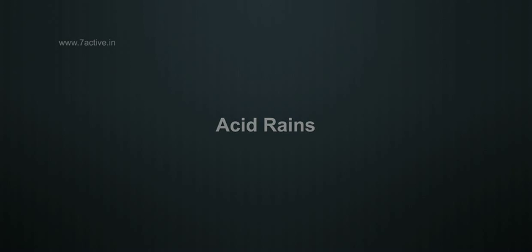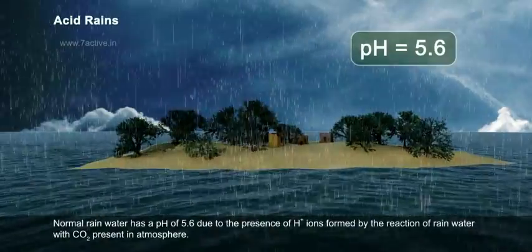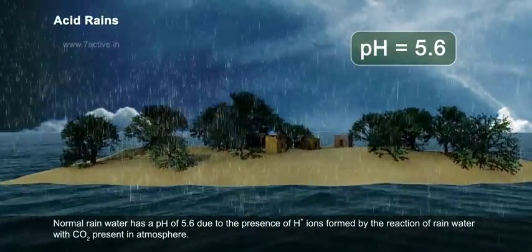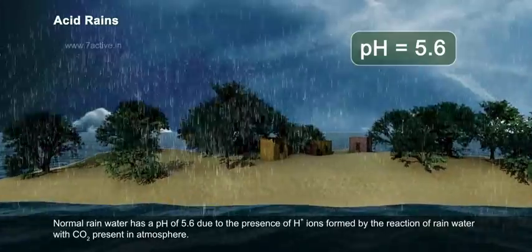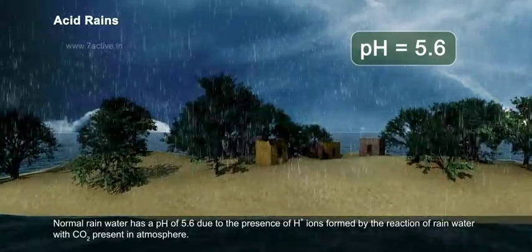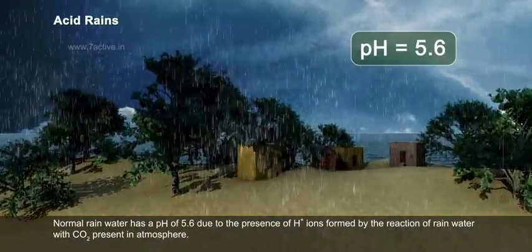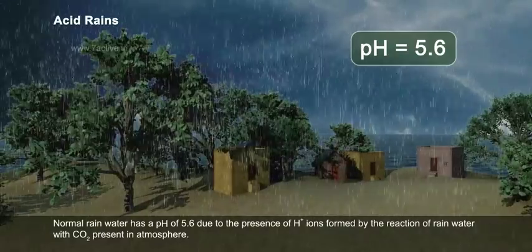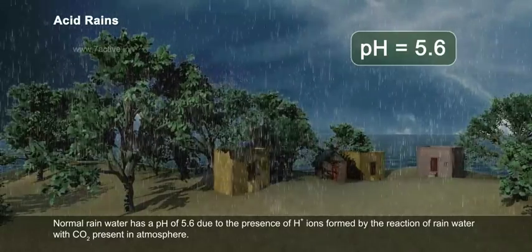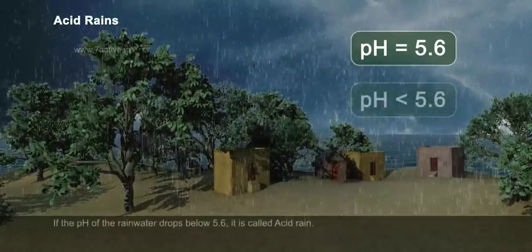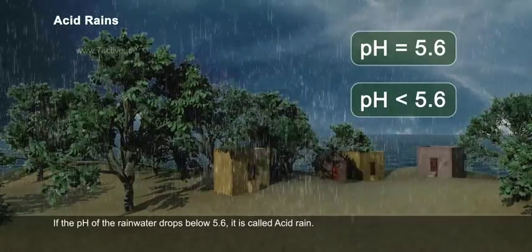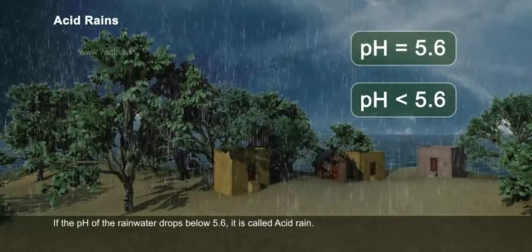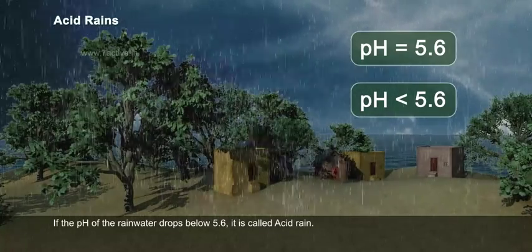Acid rains. Normal rainwater has a pH of 5.6 due to the presence of H+ ions formed by the reaction of rainwater with CO2 present in the atmosphere. If the pH of the rainwater drops below 5.6, it is called acid rain.